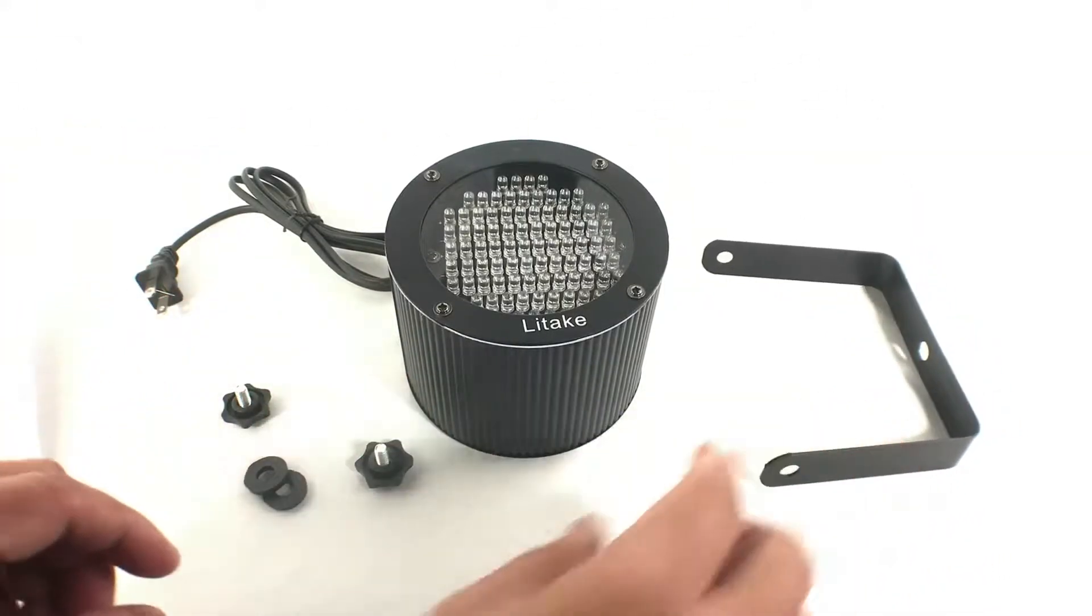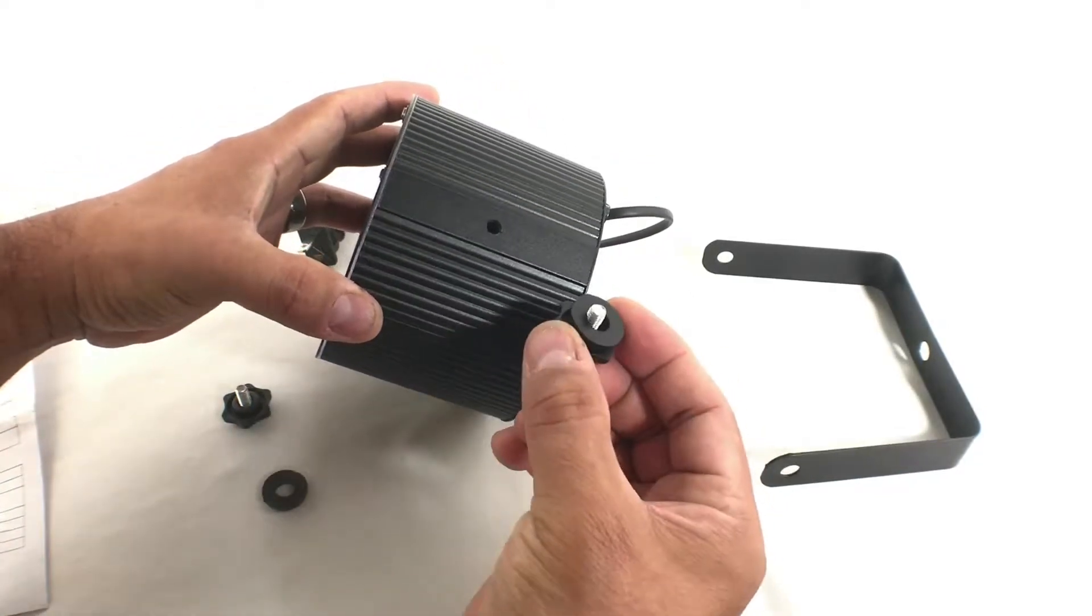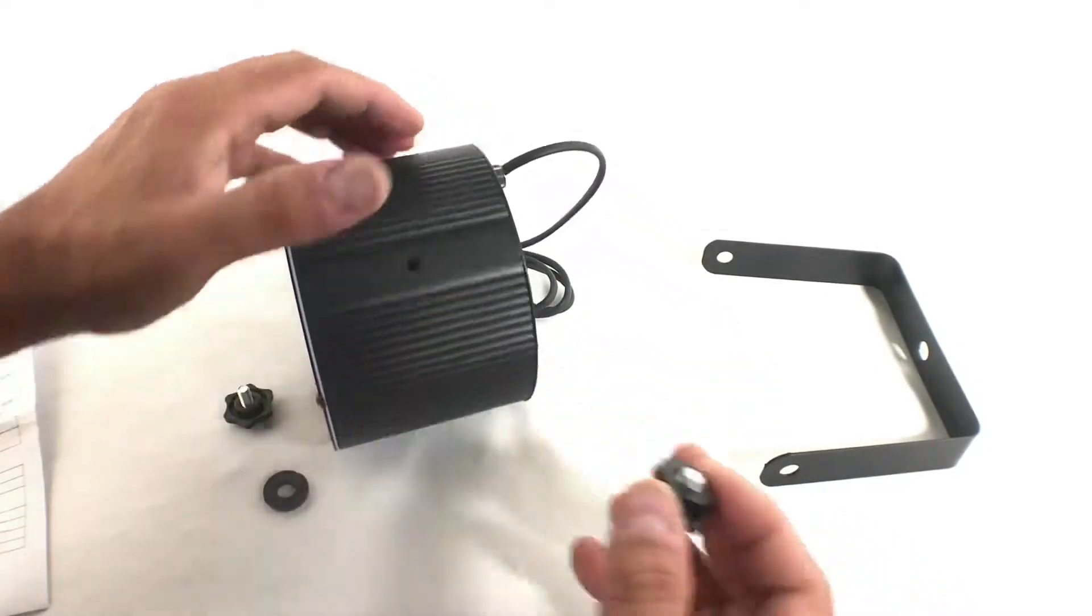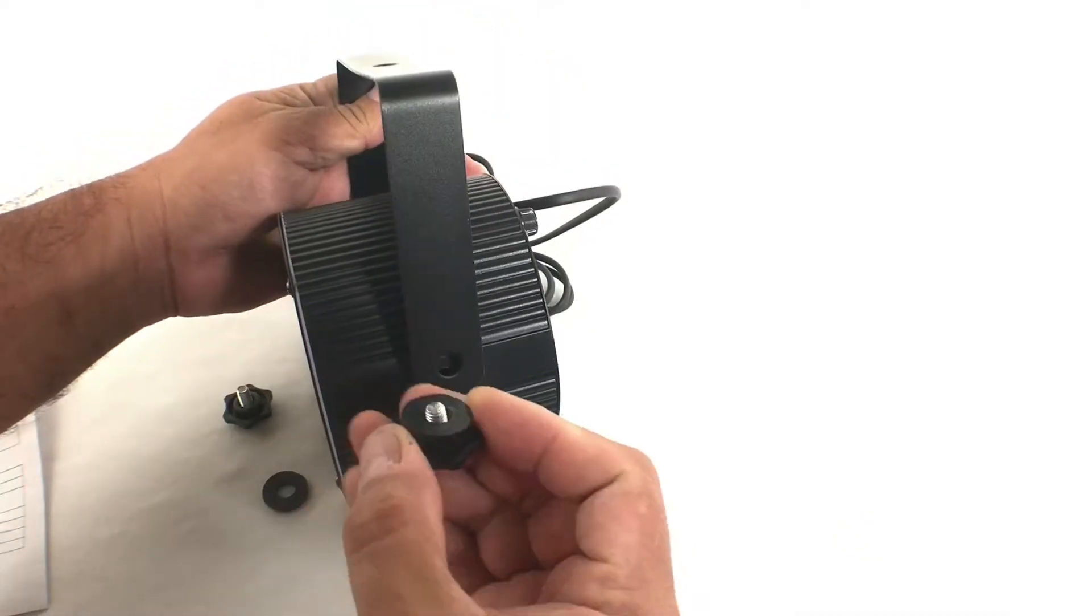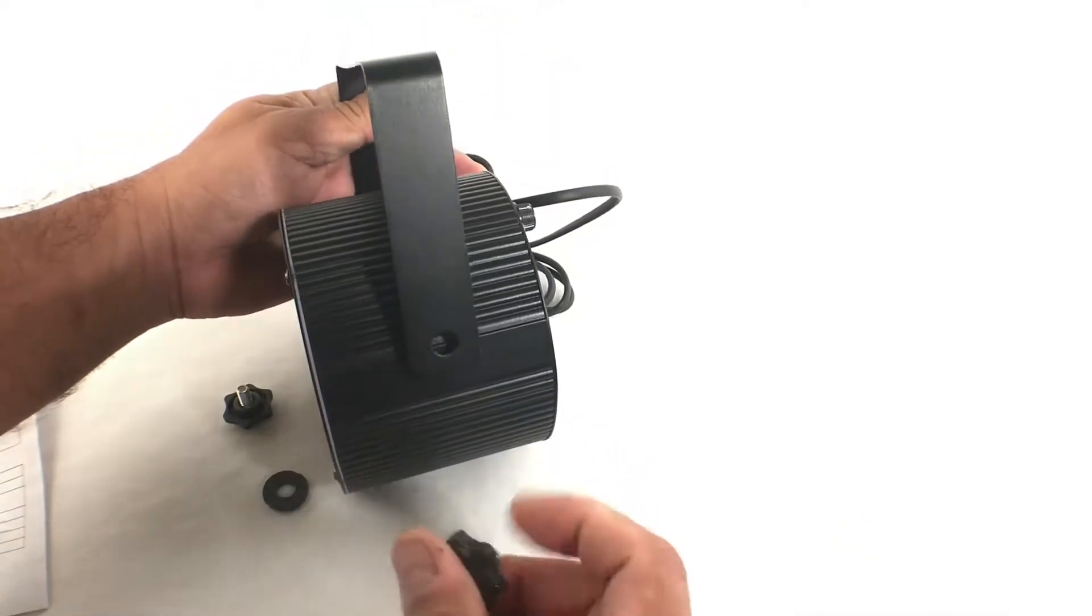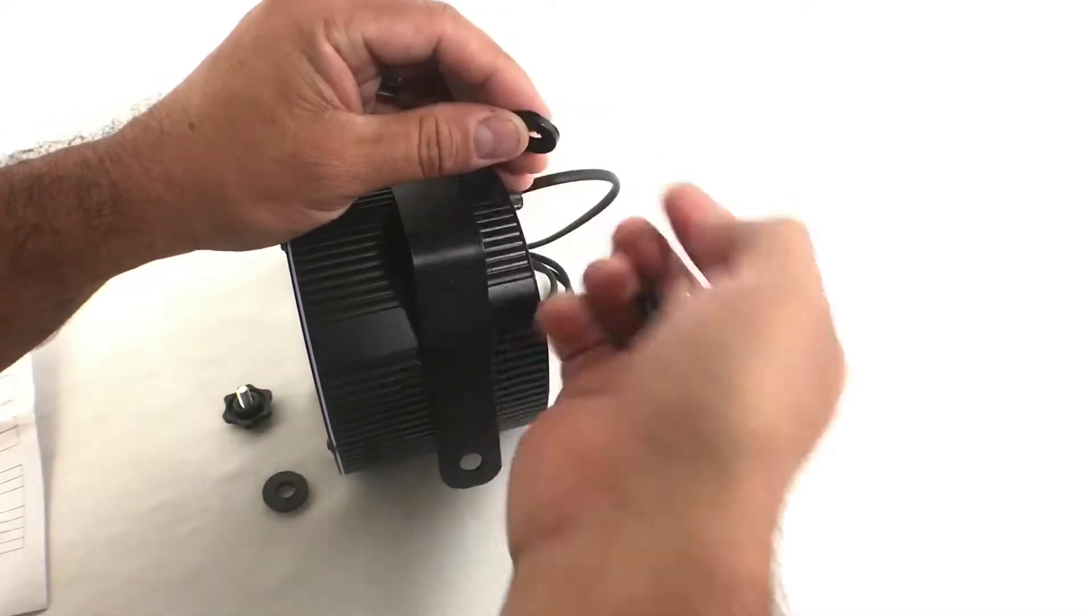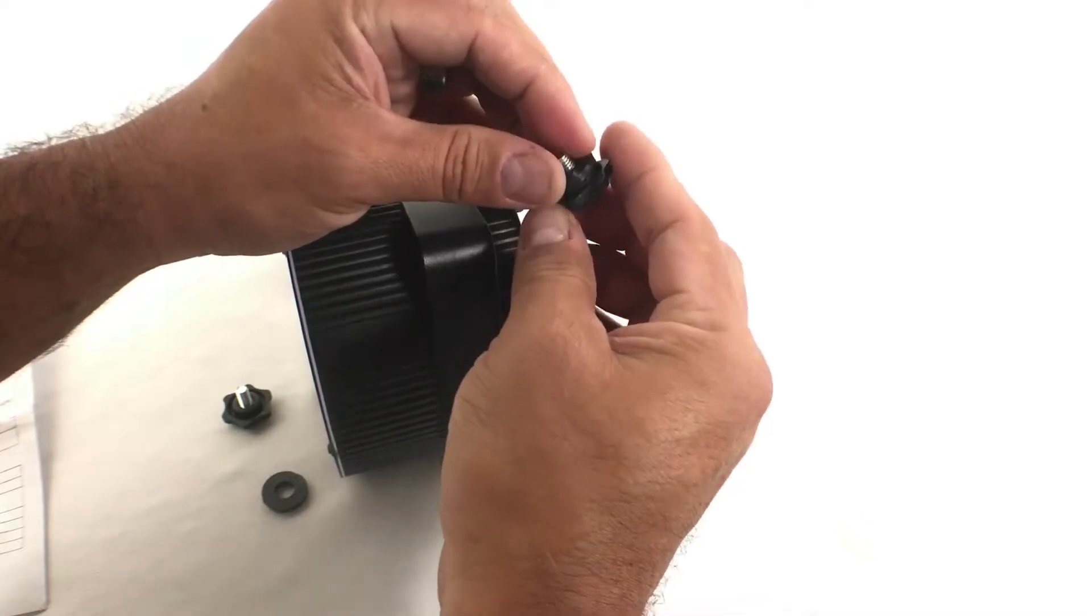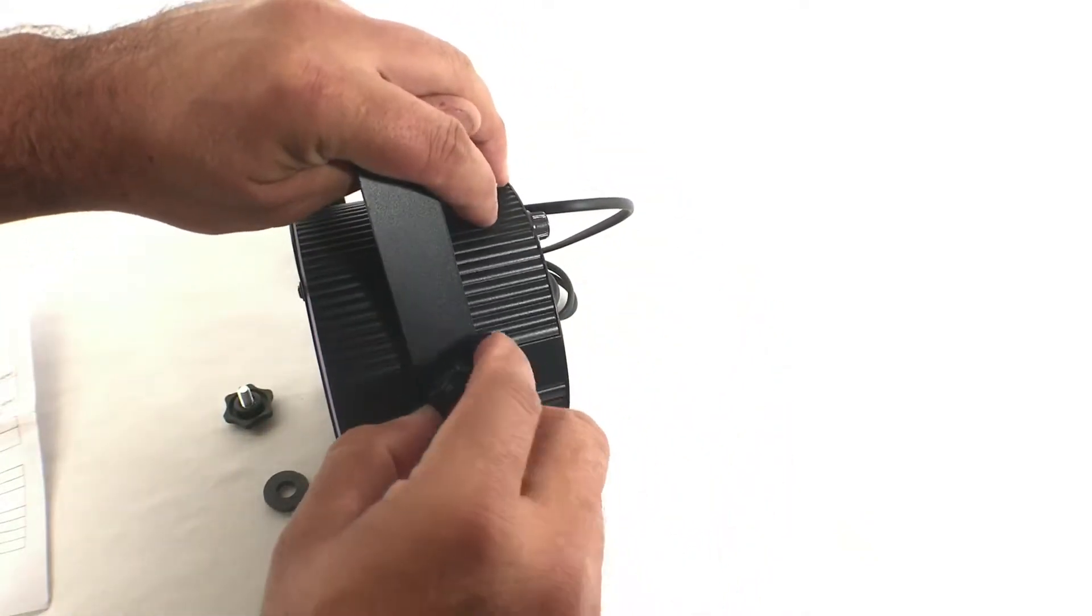Here on the bracket, easy to install. Just put the washer there, the washer with the bracket. I will go ahead and put the washer here with the bracket and just put it in.